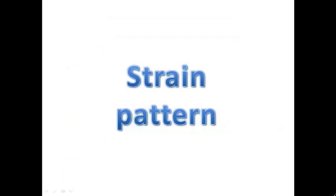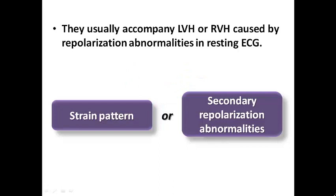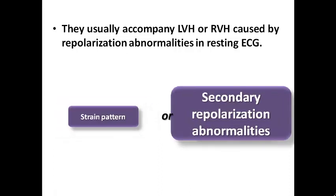Now we will discuss the strain pattern, which sometimes accompanies LVH or RVH. Hypertrophy is a pathological process in response to pressure overload on the ventricle, which adversely affects ventricular depolarization, manifesting as mild increase in QRS duration and sometimes bundle branch block. It also causes secondary abnormalities in the ST segment and T-wave. These two terms — strain pattern and secondary repolarization abnormalities — are used interchangeably, though secondary repolarization abnormalities more accurately describes the nature of these ECG features.